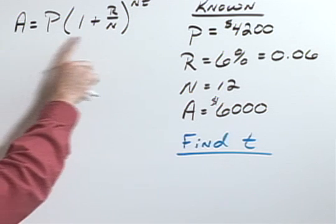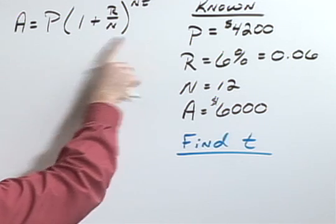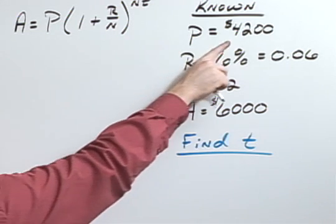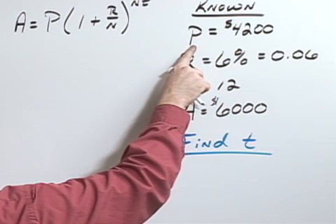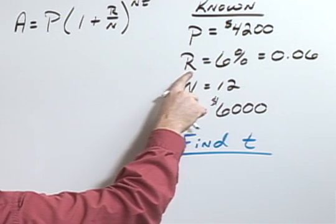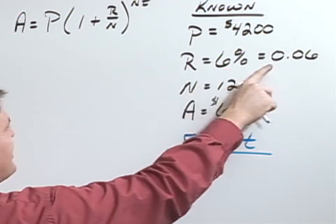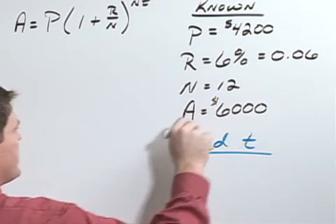For this we'll use the compound interest formula and we can specify our variables. We know that Sonia started with $4,200 so that is her principle. We know that the bank pays 6% interest, so written as a decimal, that would be 0.06.